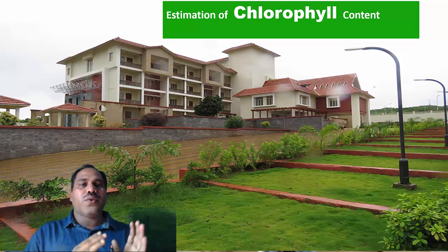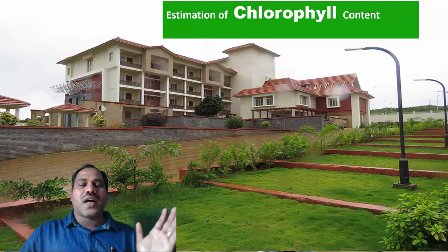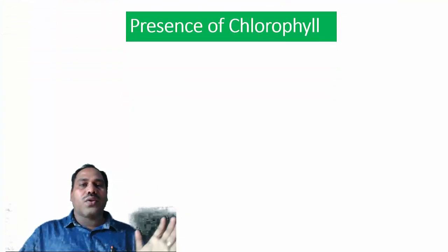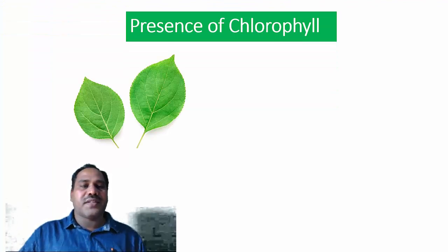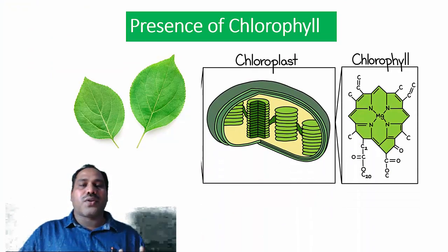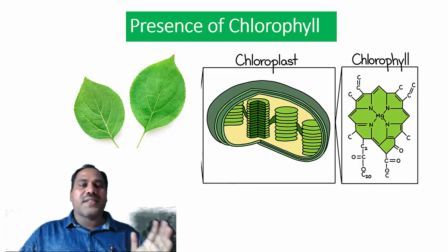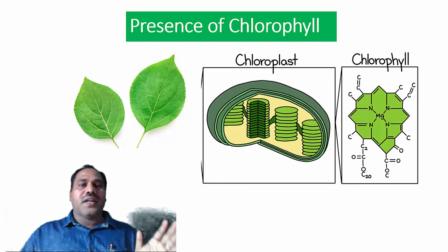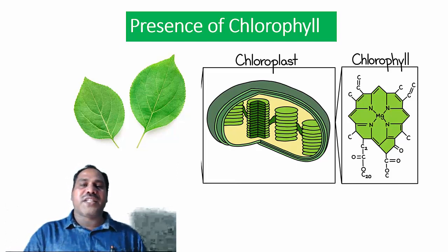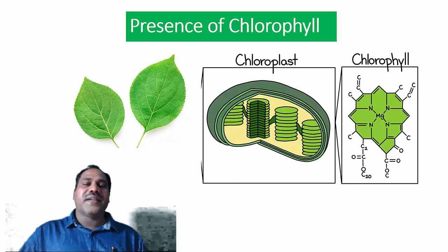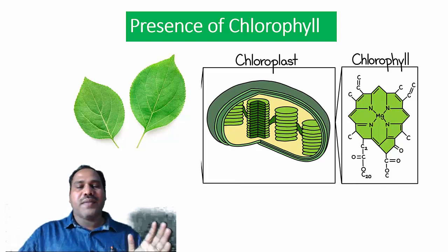Before going into the procedures of chlorophyll estimation, let us start with the basics. Chlorophyll is one of the important plant pigments that drives the photosynthetic process in plant systems. Chlorophylls are present in the green leaf tissue, specifically in the chloroplasts of mesophyll cells.